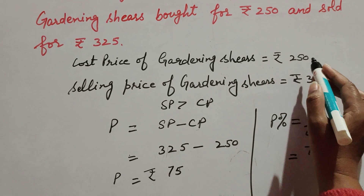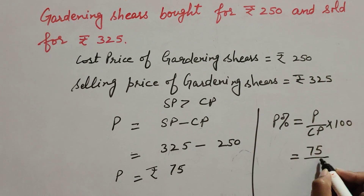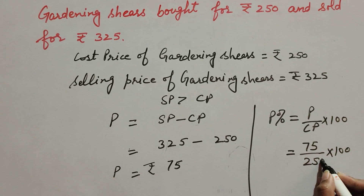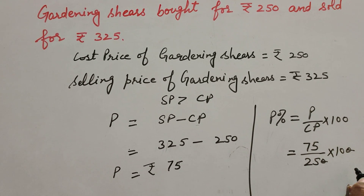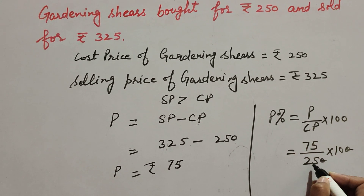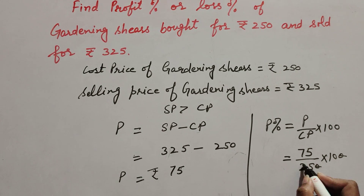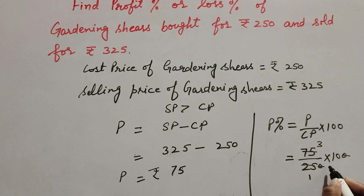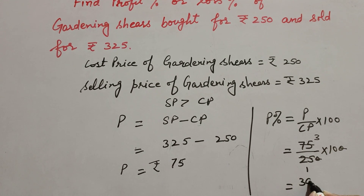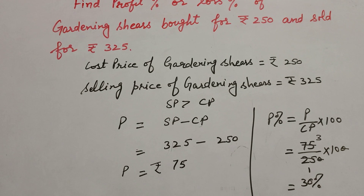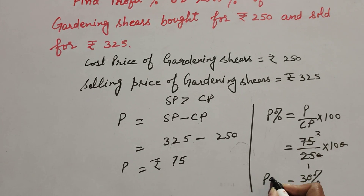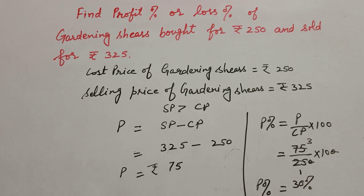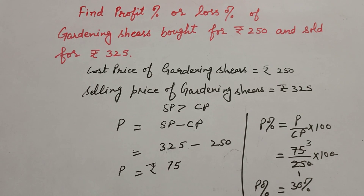So it is 75 over cost price 250 multiplied by 100. The zeros cancel, then 75 divided by 25 — since 25 threes are 75, we get 3 multiplied by 10 equal to 30. So profit percentage equals 30 percent. Thanks for watching — like, comment, and share my video and subscribe to my YouTube channel.